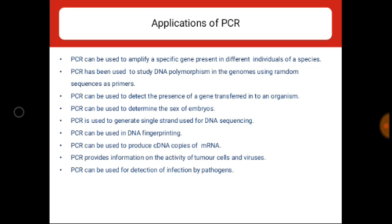Usually 20 to 30 cycles are carried out in most PCR reactions. After the PCR cycle, the amplified DNA segment is purified by gel electrophoresis and can be used for the desired purpose. Here is a diagram of a complete PCR cycle.